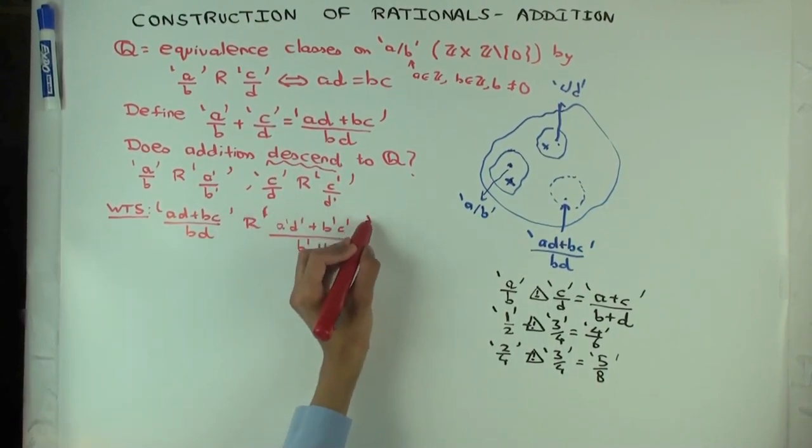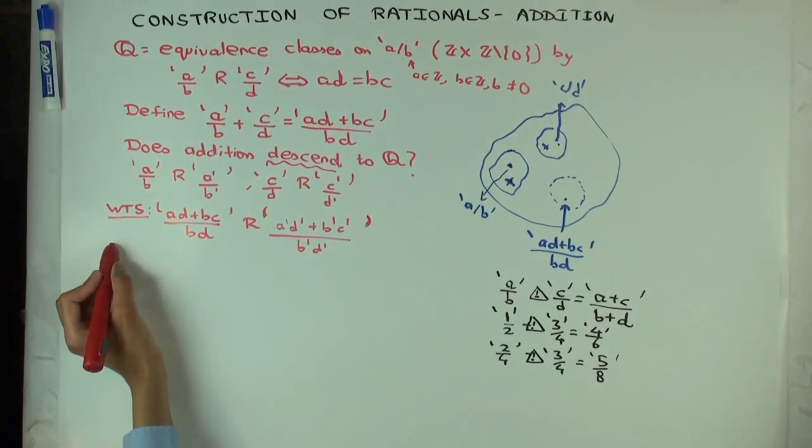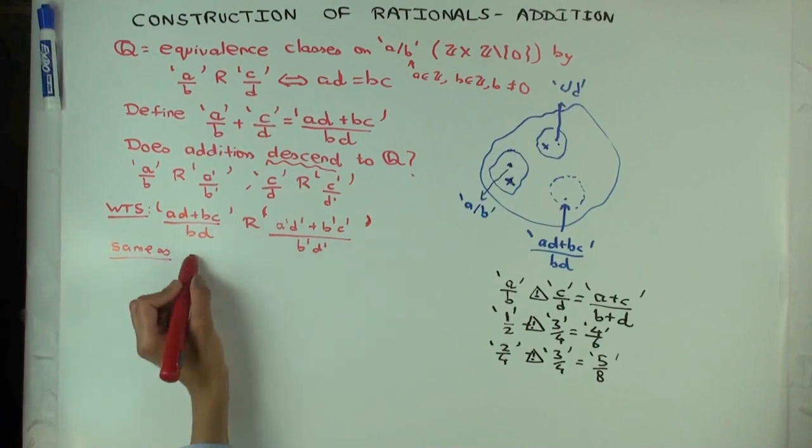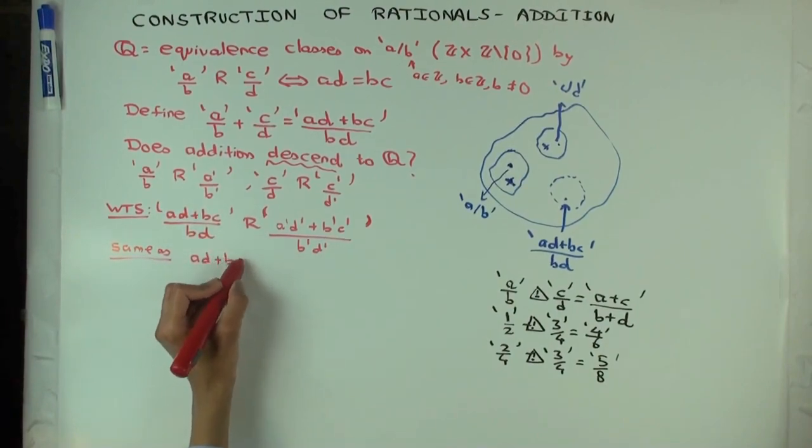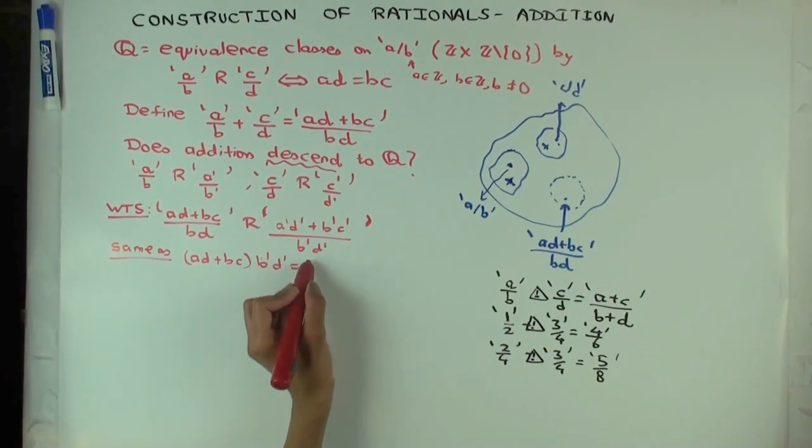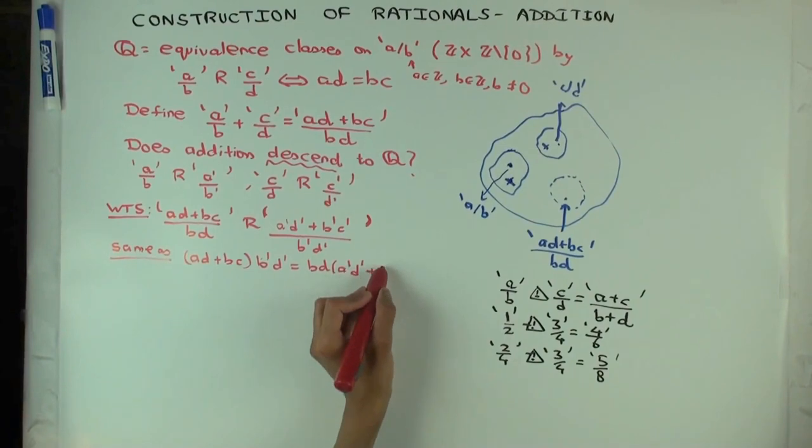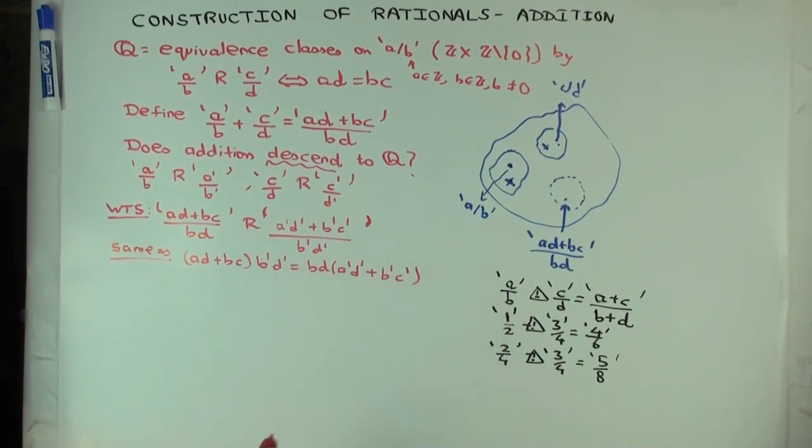I'll make these big circles, of course, more circular to avoid confusion with the prime. Which is equivalent, which is the same as showing what? Well, I can just work out what R means. It means ad plus bc times b prime d prime equals bd times a prime d prime plus b prime c prime. This is what I want to show.